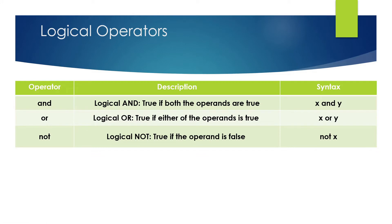Logical operators: there are three types — and, or, not. 'And' requires both operands to be true. 'Or' requires only one condition to be true. 'Not' transforms one state to the other — true if the operand is false, false if the operand is true.